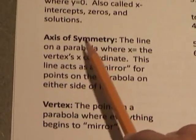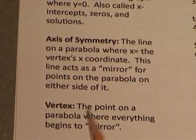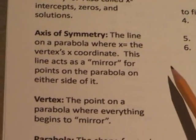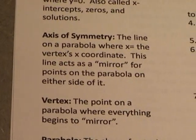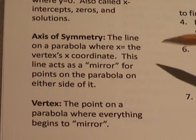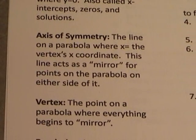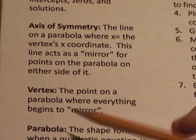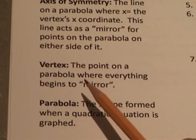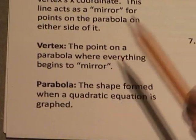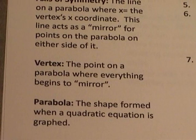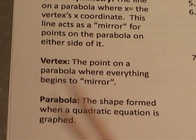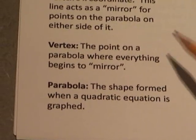Now, the axis of symmetry is the line on the parabola where x is the vertex's x-coordinate. This line acts as a mirror for all of the points around it. The point on a parabola where everything begins to mirror on either side of it is the vertex. The vertex has no mirror.